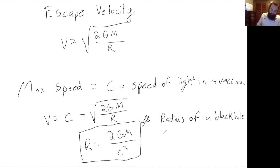Specifically this is the Schwarzschild radius. That's a special black hole that isn't rotating and doesn't have charge, so that's the most basic black hole you can think of.